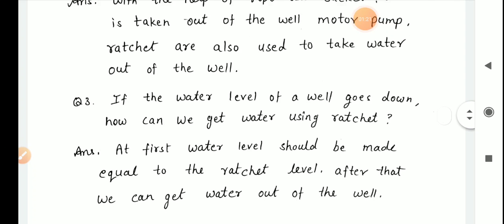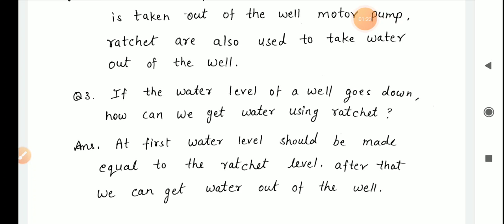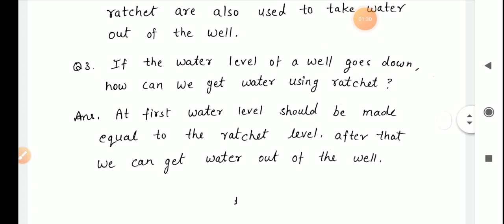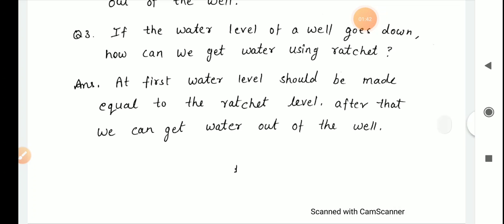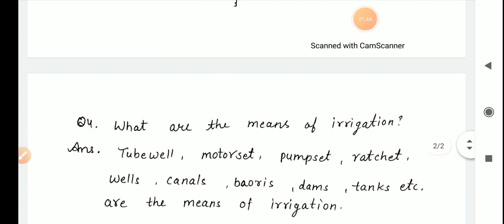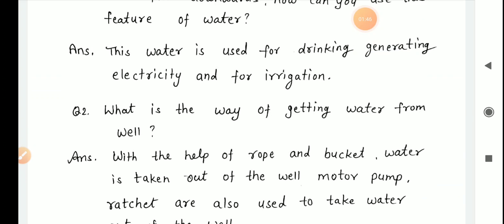If the water level of a well goes down, how can we get water using ratchet? At first, water level should be made equal to the ratchet level. After that, we can get water out of the well.